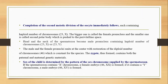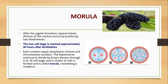After fertilization, the product formed is called the zygote. The zygote contains both the paternal and maternal genetic materials. Now, after zygote formation, various mitotic divisions of the nucleus occur, producing two blastomeres. Here you can see a zygote containing 46XY or 46XX chromosomes undergoing mitotic division to form two blastomeres.